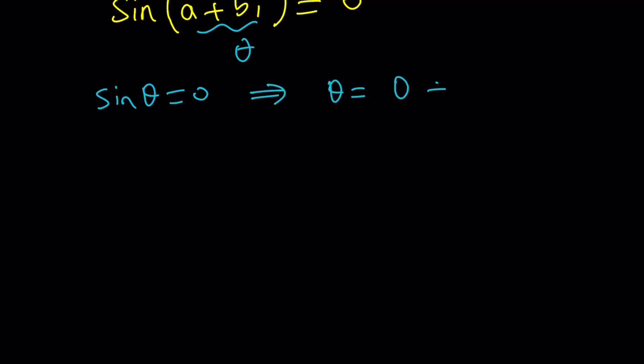And I can definitely add multiples of pi to it, because zero and then pi, sine pi is also zero, right? So on and so forth. But what if theta is complex?